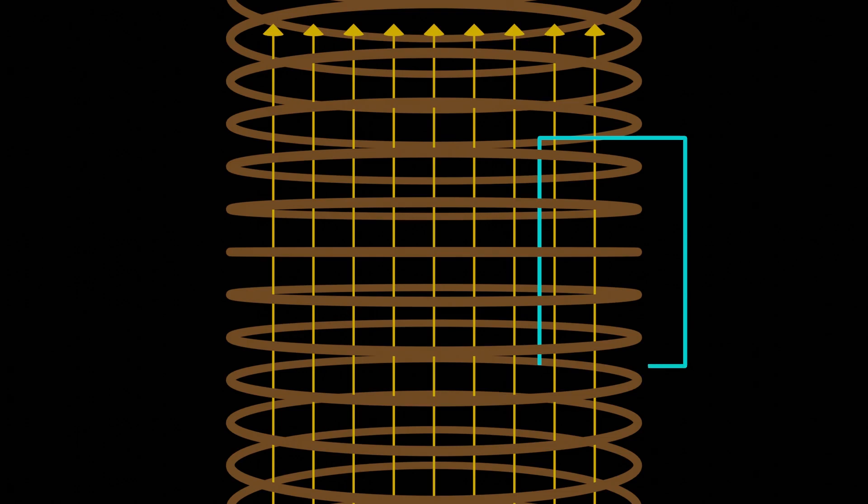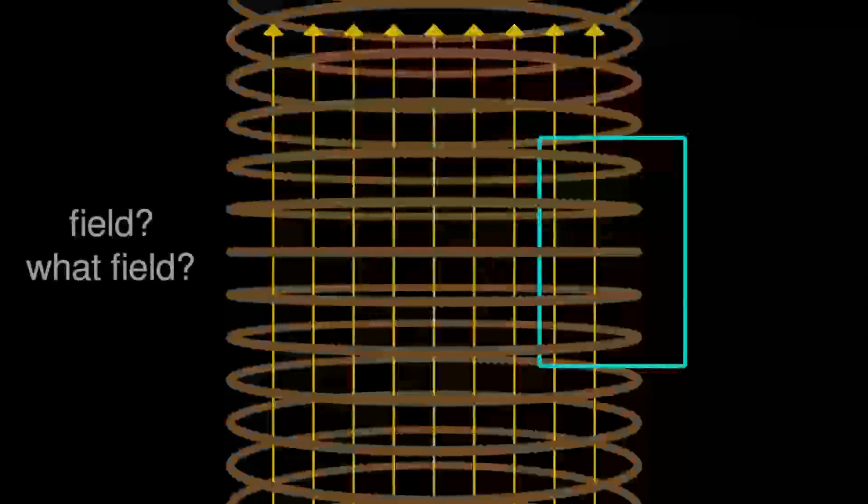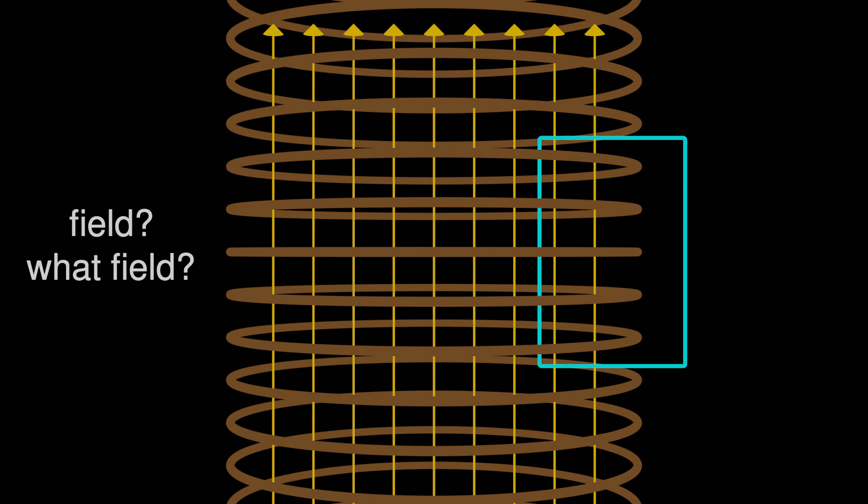Now technically, even for an infinite solenoid that wraps around, there's still actually a non-zero magnetic field outside the solenoid. But for our intents, we can call it negligible compared to the magnetic field strength inside the solenoid, meaning we'll just pretend that it doesn't exist.